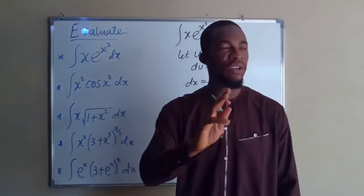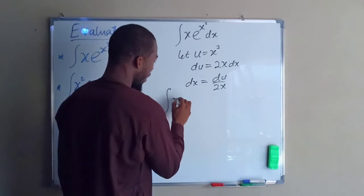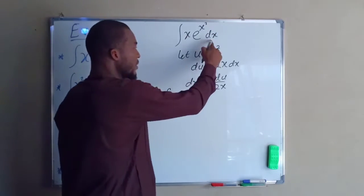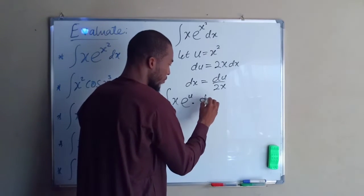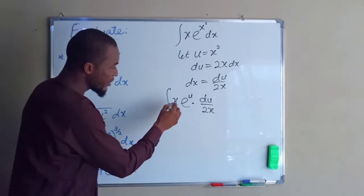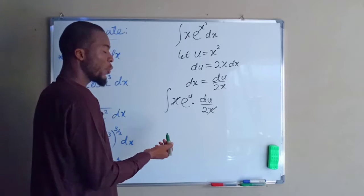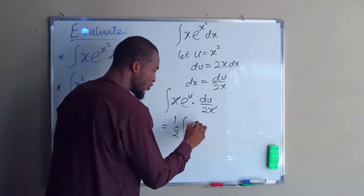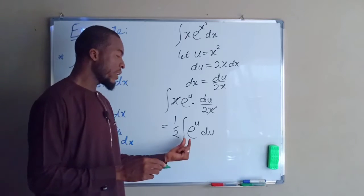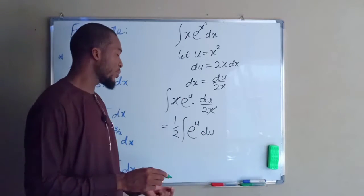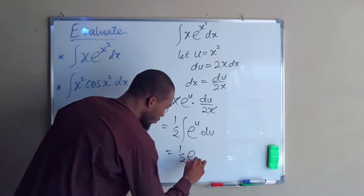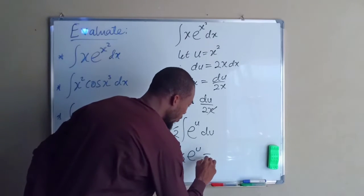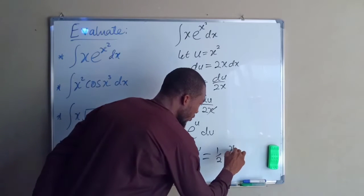dx is now going to be du divided by 2x if you divide both sides by 2x. Now let us plug this into our integration. This is now equal to x times e to the u, because we let x squared equal to u. But dx is now du divided by 2x. So this x can cancel that x, and we can factor out one half. This gives us 1 over 2 times the integral of e to the u du. The integral of e to the u is e to the u, so this equals one half e to the u. But u equals x squared, so this is equal to one half e to the power of x squared plus C.